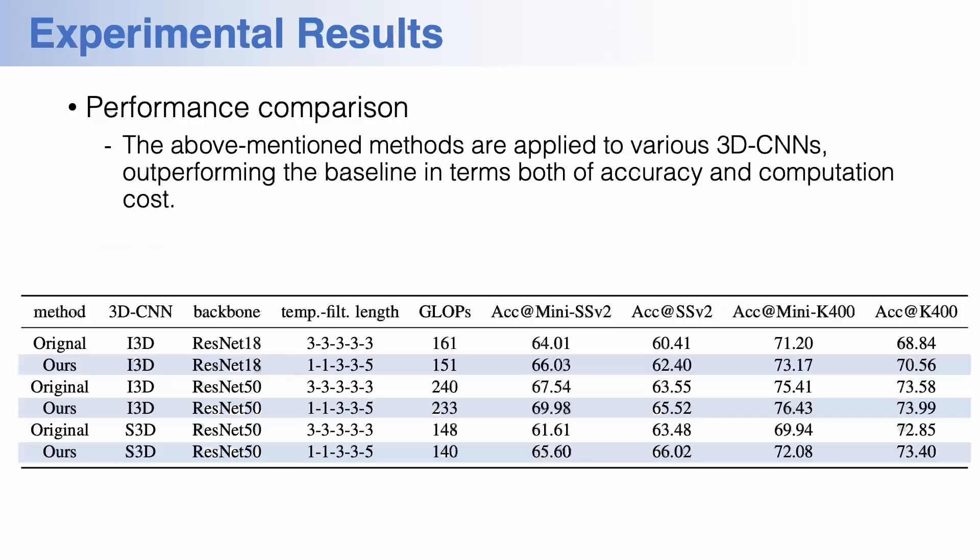Finally, we report performance comparisons on something-something and Kinetics datasets by embedding the proposed method to various backbone 3D CNNs. These results show that the method effectively improves performance in terms of both classification accuracy and computation cost. Thank you.